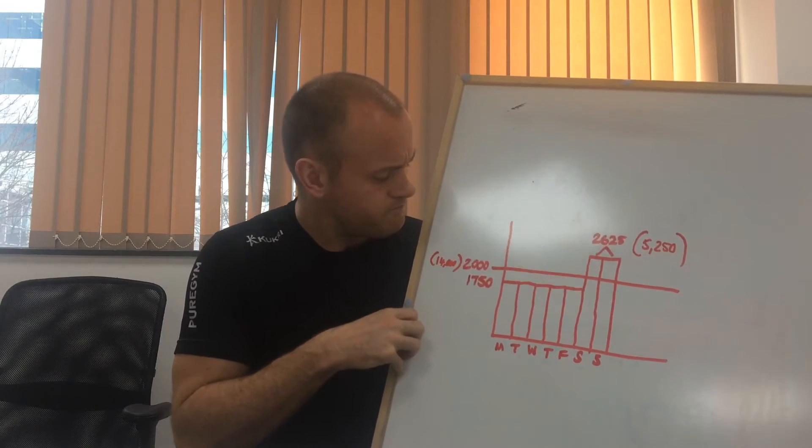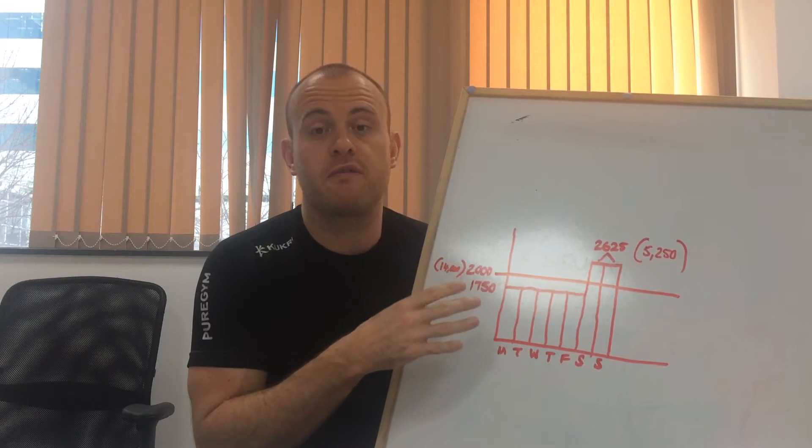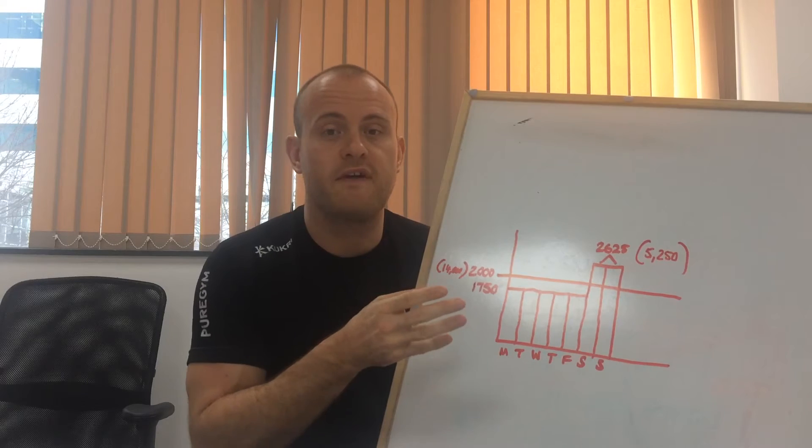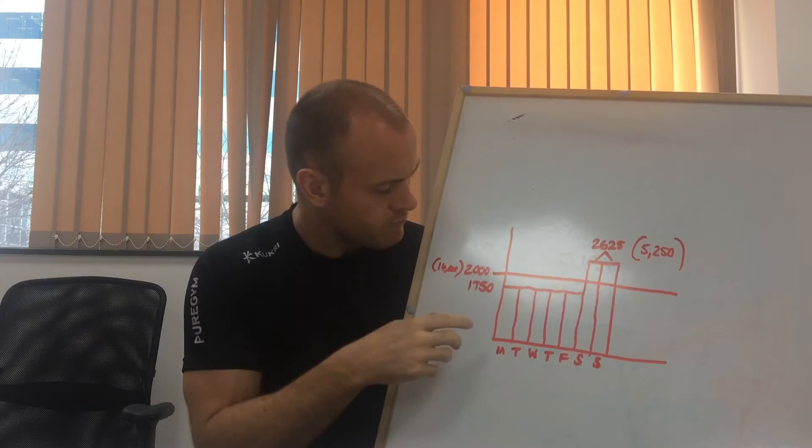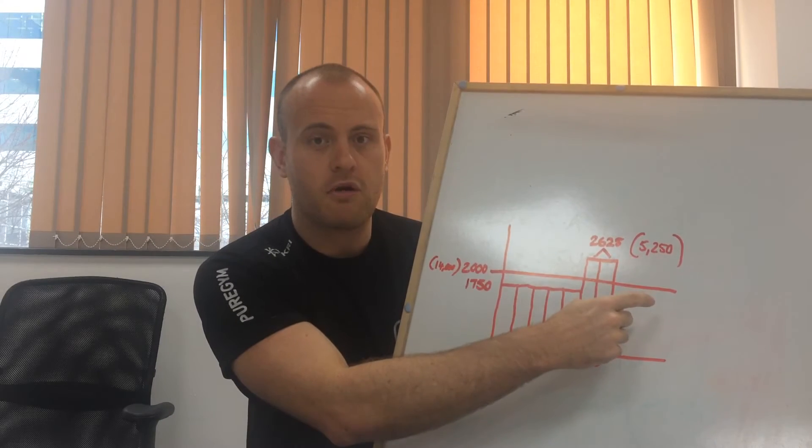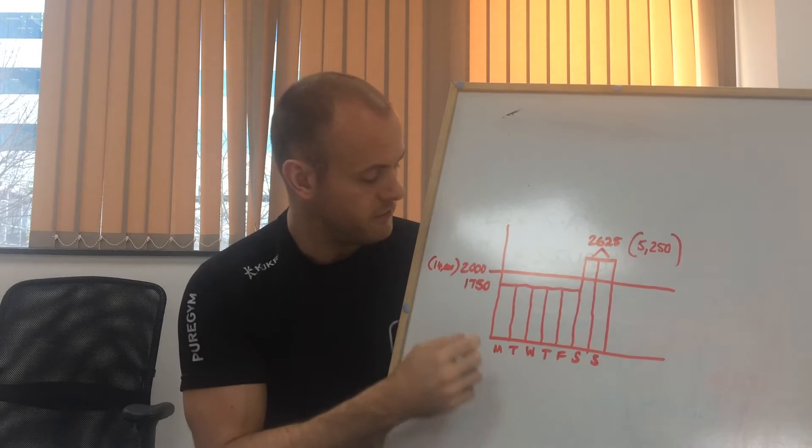Now I've taken just a round figure of 2000 calories per day. So over the course of the week, that's 14,000 calories that we're going to manipulate. That's a 2000 calorie barrier across there, the straight line. And then you've obviously got the days along the bottom.